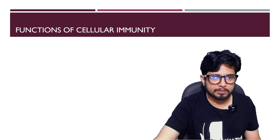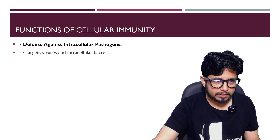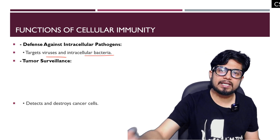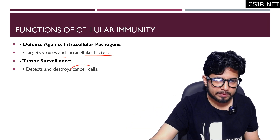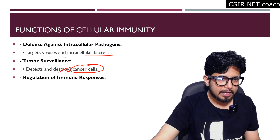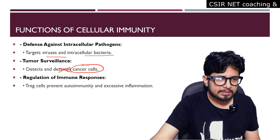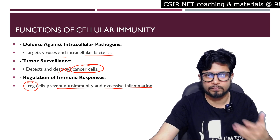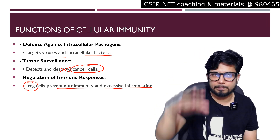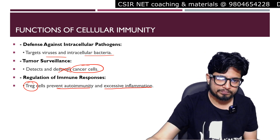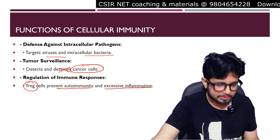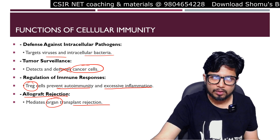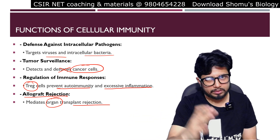The functions of cellular immunity include: defense against intracellular pathogens, targeting viruses and intracellular bacteria; tumor surveillance, where cancer cells undergoing transformation are found and destroyed; regulation of the immune response, where T regulatory cells prevent autoimmunity and excessive inflammation by suppressing immune activity; and allograft rejection, where cell-mediated immunity mediates organ transplant rejection when an organ is transferred from donor to recipient.